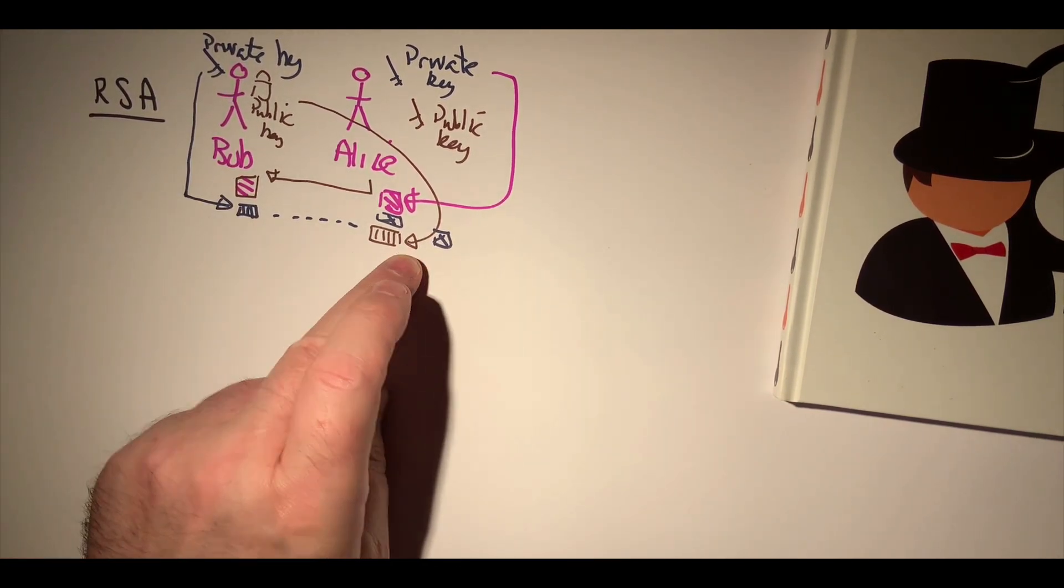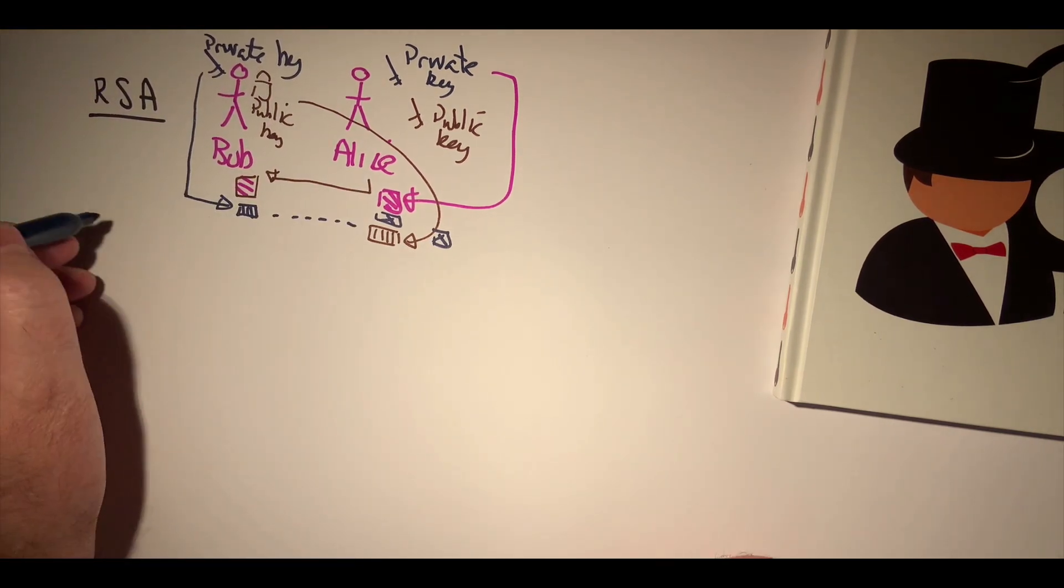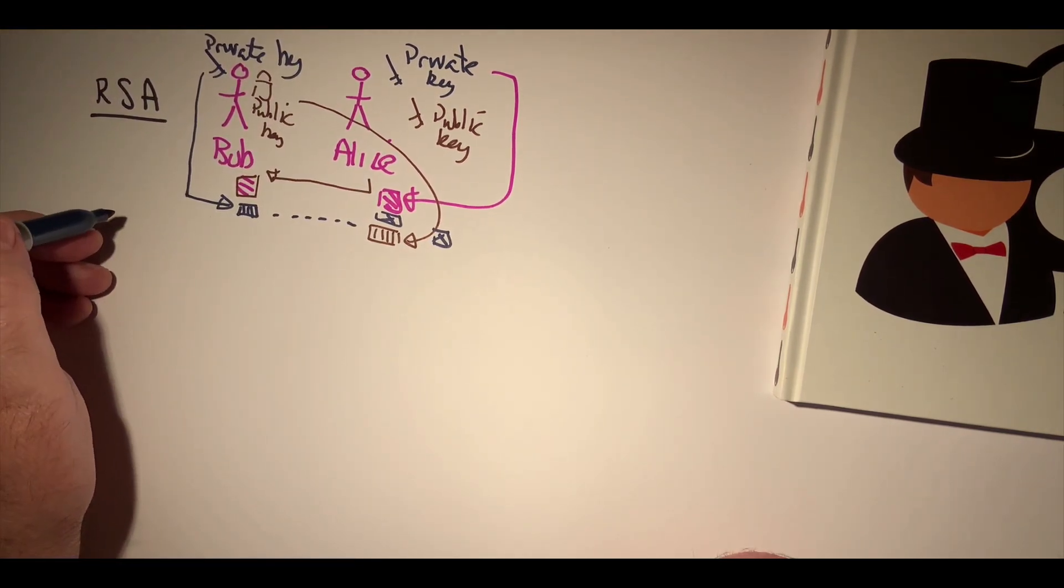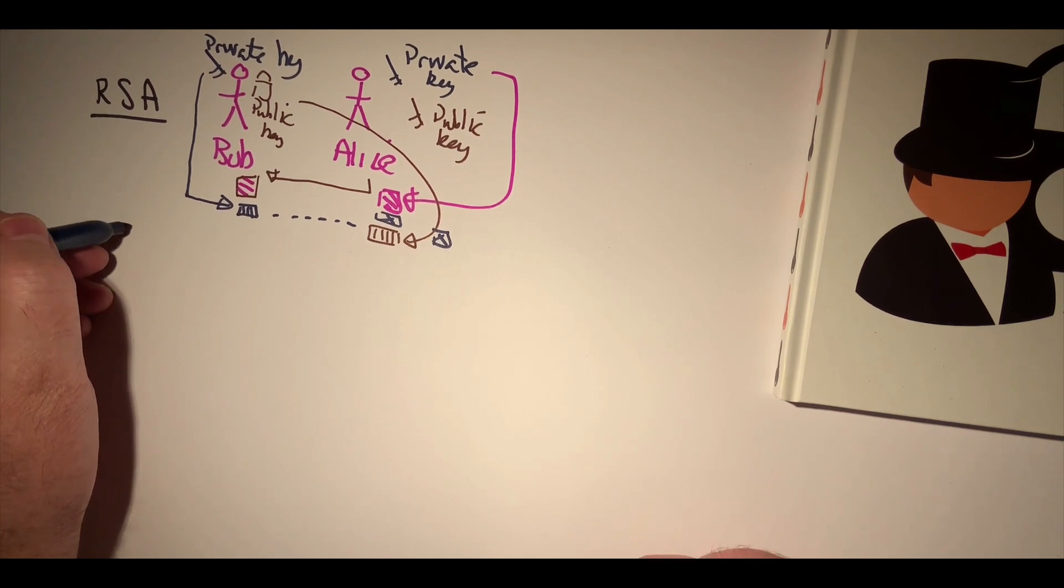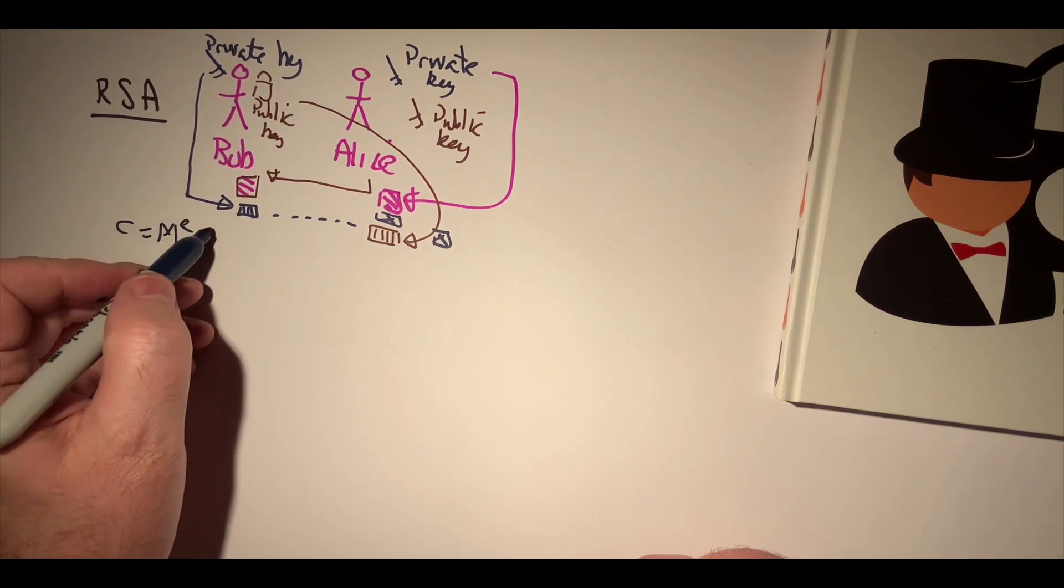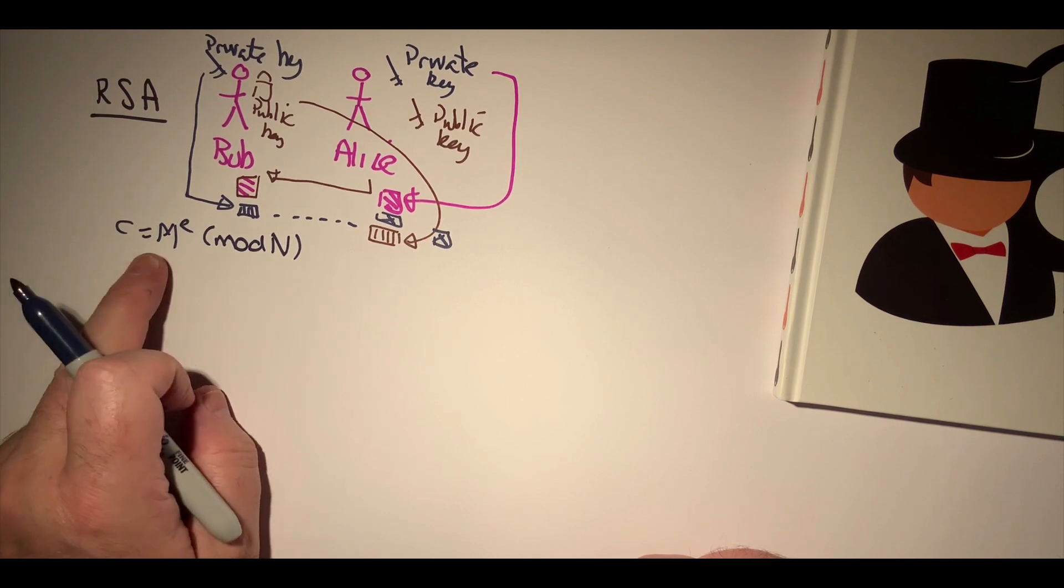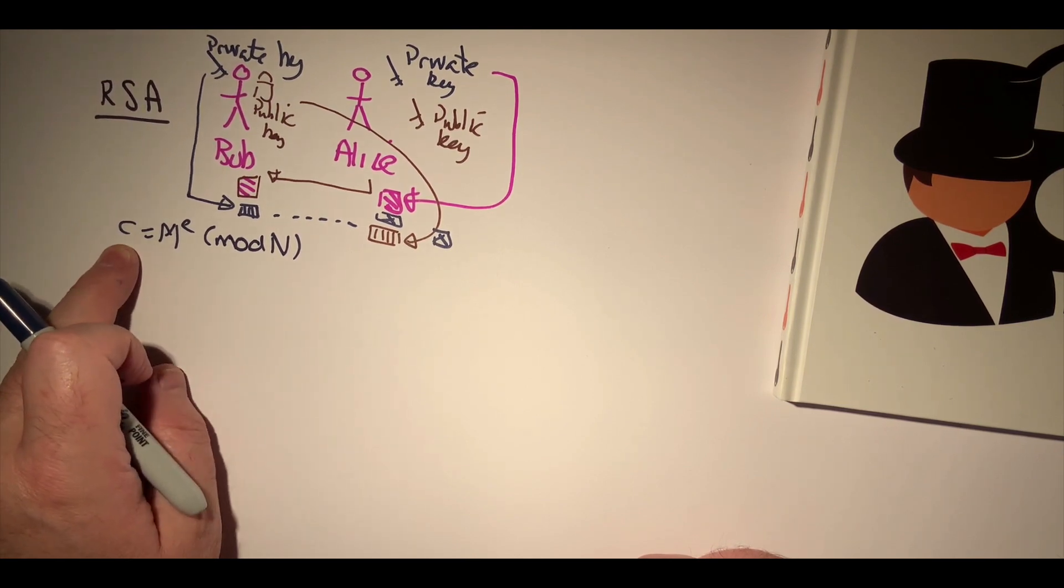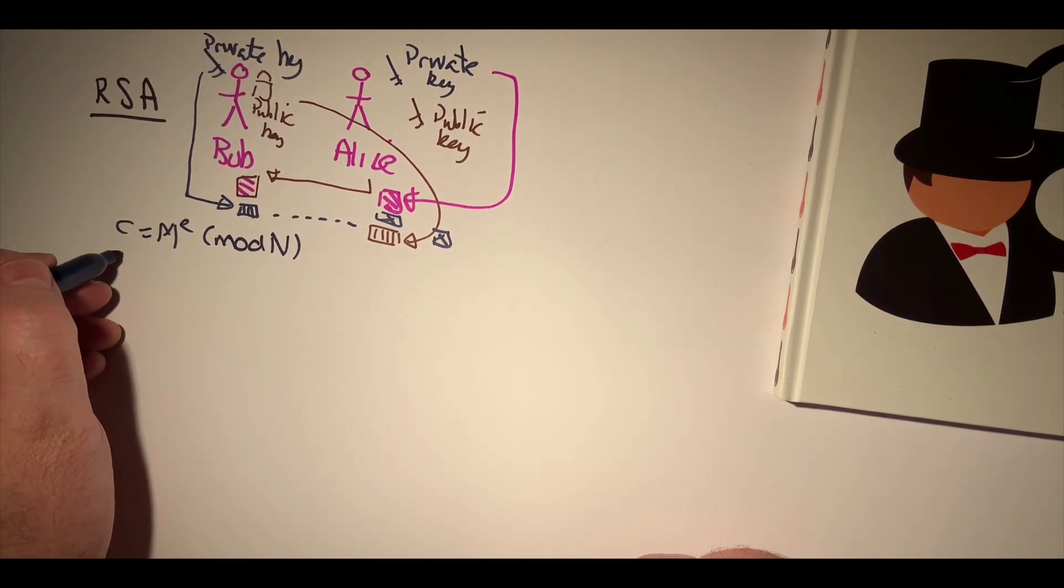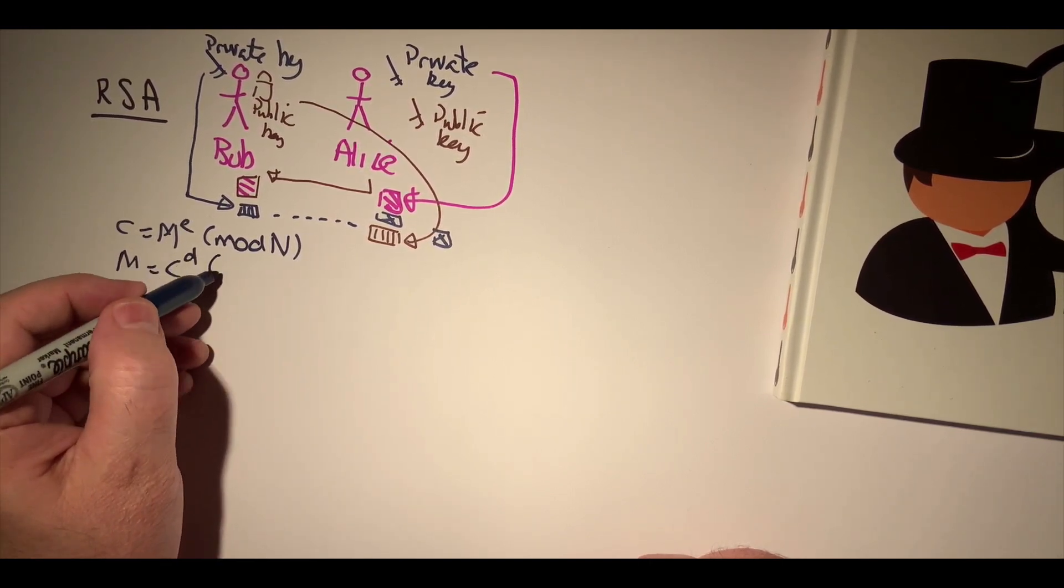Okay, so let's look at the basics of RSA. With RSA we use an exponential cipher, so we take a message and we have an encryption key and a modulus, and in this way we create the cipher. To recover the message, we basically take the cipher and find our decryption key.